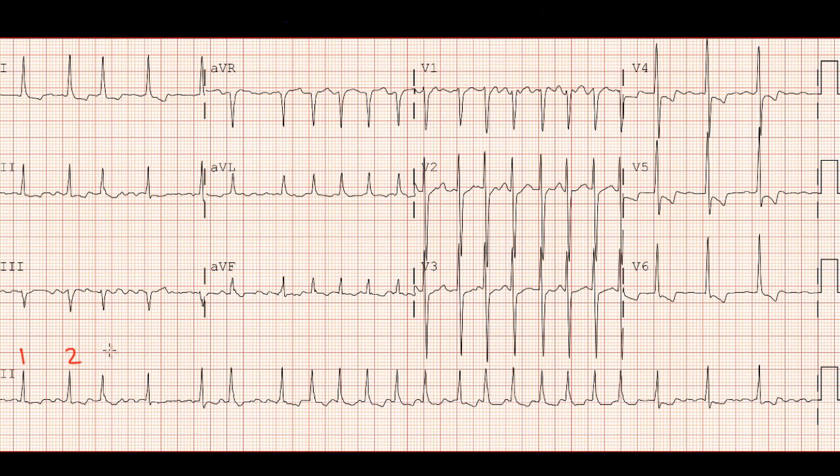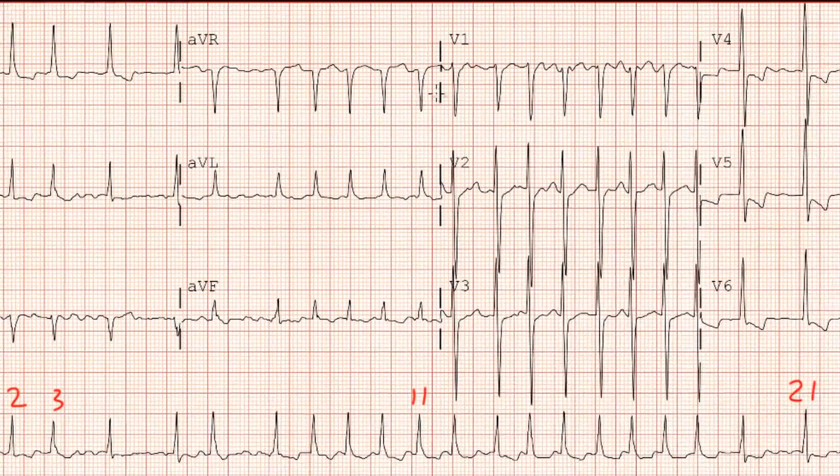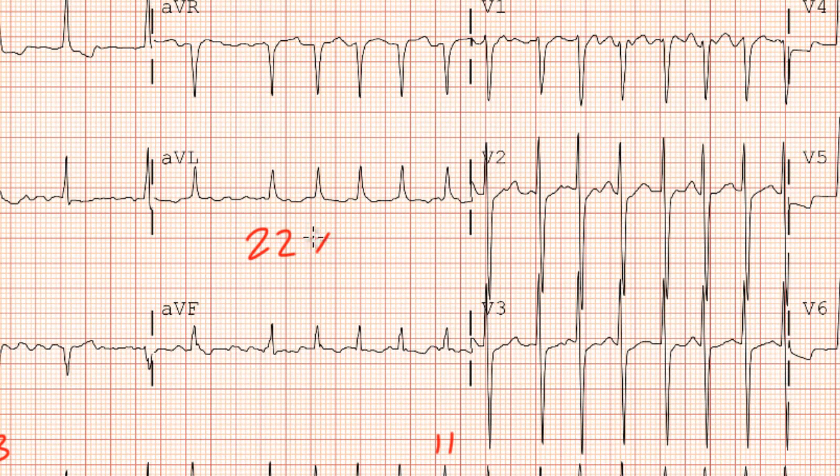We got 1, 2, 3, 4, 5, 6, 7, 8, 9, 10, 11, 12, 13, 14, 15, 16, 17, 18, 19, 20, 21, 22 QRS complexes on this 10 second EKG tracing. That means our heart rate is 22 times 6, or 132 beats per minute. Okay, now I'm just showing off.